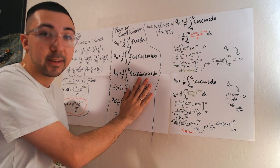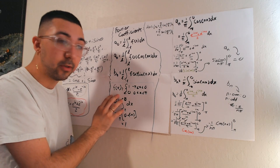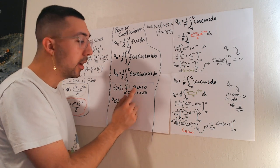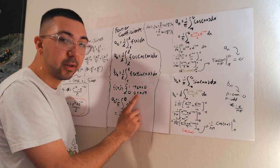And so the function that I've chosen to look for the Fourier coefficients for is f of x equal to the piecewise function, 1 from negative pi to 0, and 0 from 0 to pi.